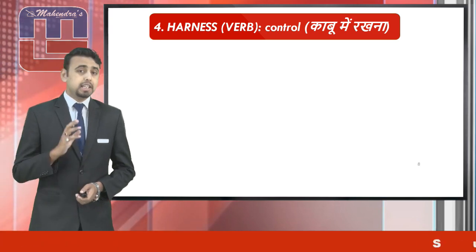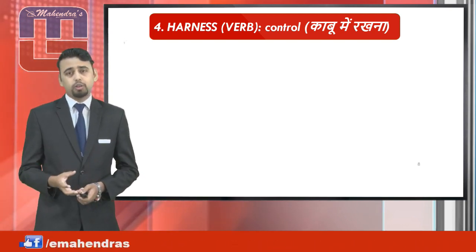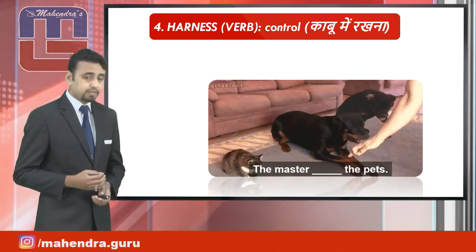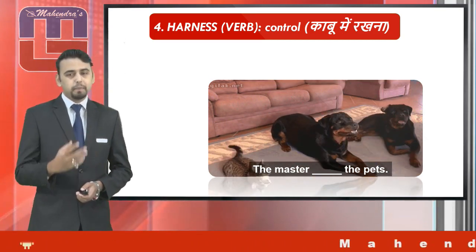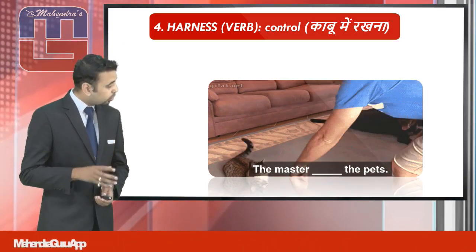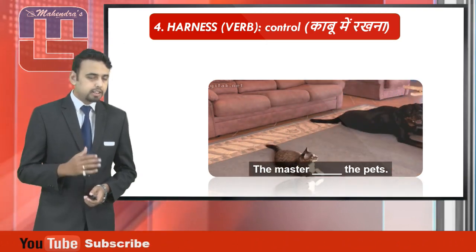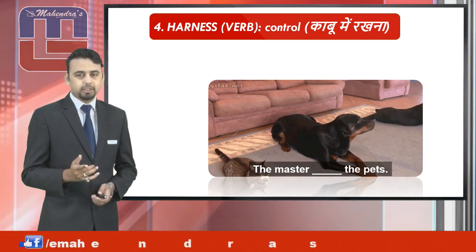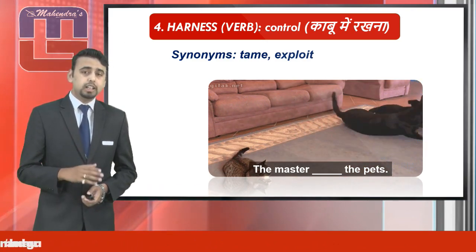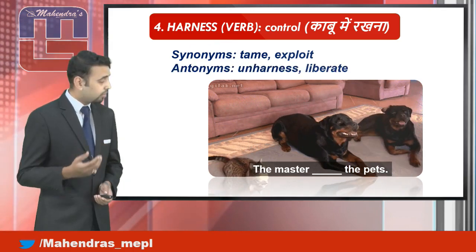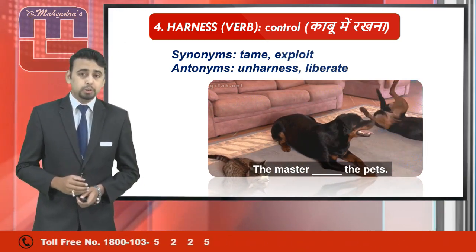Here's the next word: it's 'harness.' Harness, being a verb, means to control or exploit. Let's have a look at the usage. The master blank space the pets — what we want to convey is the master controls or tames the pets. So the usage is: 'The master harnesses the pets.' The synonyms of harness are tame or exploit, and the antonyms are unharness or liberate. I hope you got this one. Let's go to the last word of the day.